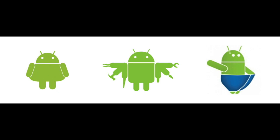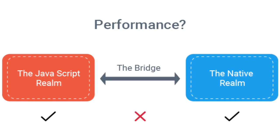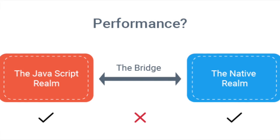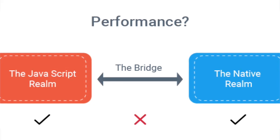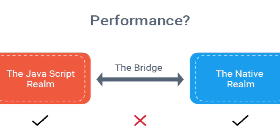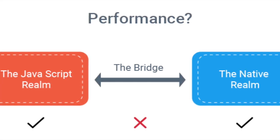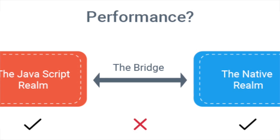The fourth tip is: reduce load on the bridge. In React Native, the JavaScript side interconnects with the native side using a bridge. To ensure better performance, you have to lessen the bridge load so communication between both sides is improved. This can be done by reducing your dependability on libraries, since some libraries pass heavy data to the native side through the bridge. Also avoid moving components on the main thread due to their heavy use of the message queue to connect with the native side.